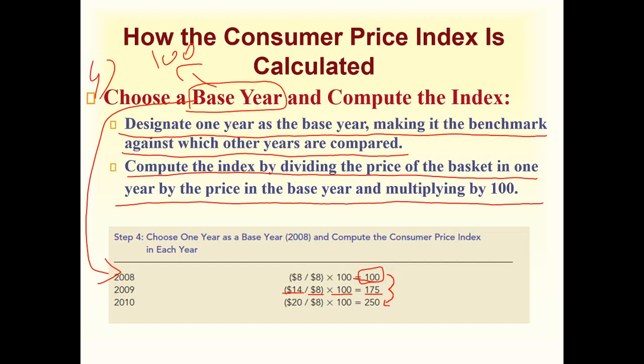To summarize step four: we choose the base year — in this case 2008. Then we use the formula — price of basket in one year divided by price in the base year, multiplied by 100 — to calculate CPI for each year. In the base year 2008 the CPI is always 100. In 2009 it is 175, and in 2010 it is 250.